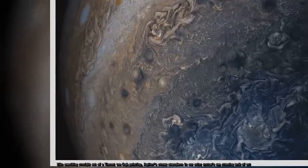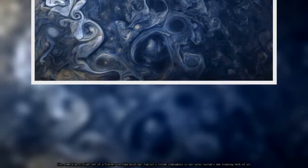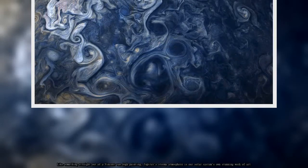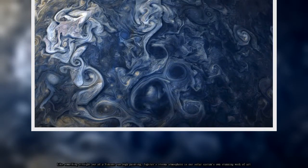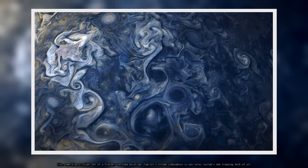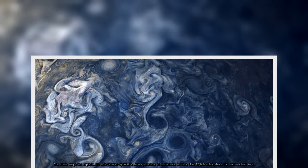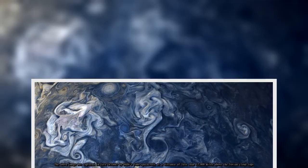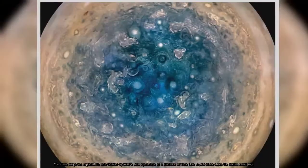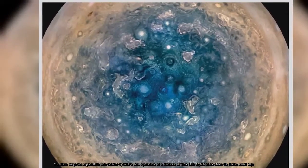Like something straight out of a Vincent van Gogh painting, Jupiter's stormy atmosphere is our solar system's own stunning work of art. The above image was captured in late October by NASA's Juno spacecraft at a distance of less than 12,000 miles above the Jovian cloud tops.